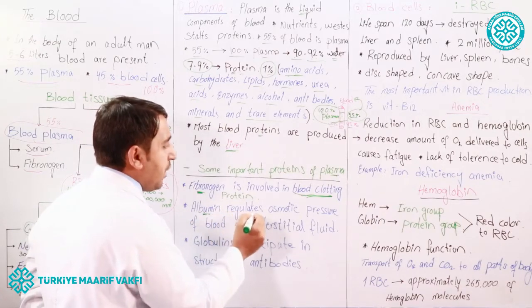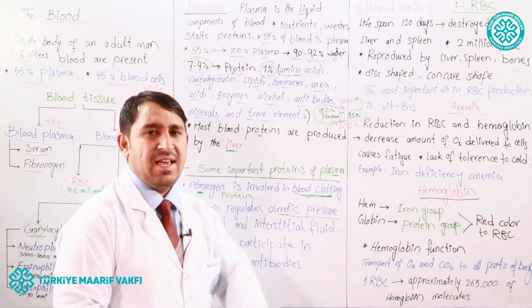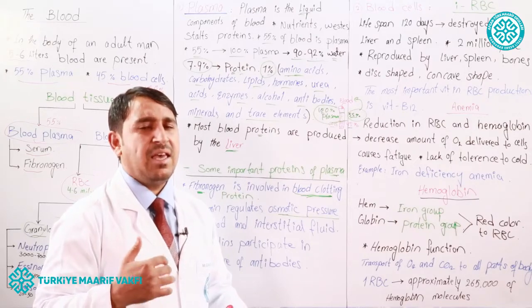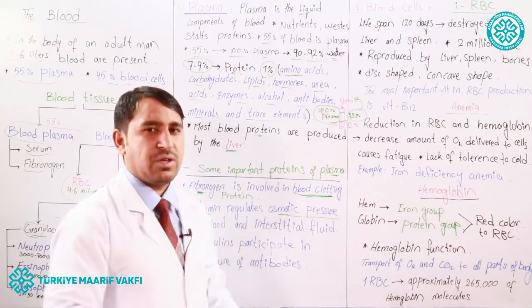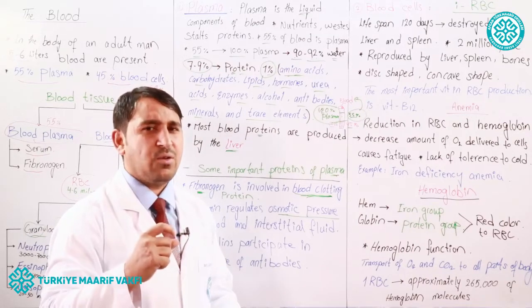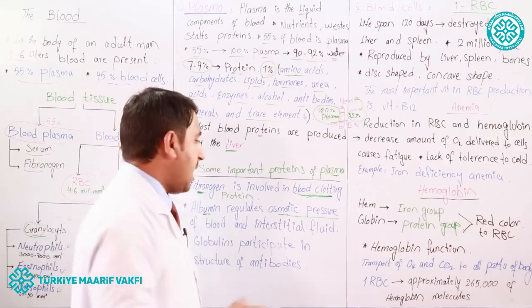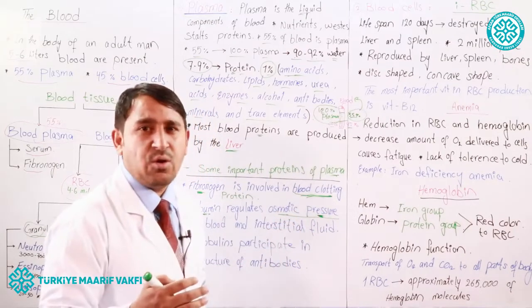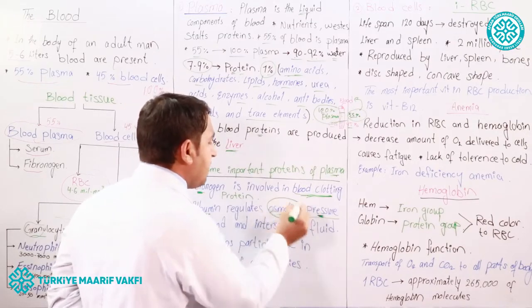Osmotic pressure is the pressure occurring in the process of osmosis. Osmosis is the process in which molecules travel from high concentration to low concentration — this is diffusion. If water molecules transfer from high concentration to low concentration through a semipermeable membrane, osmosis has occurred. The pressure needed to transport water molecules from low to high concentration through a semipermeable membrane is called osmotic pressure.